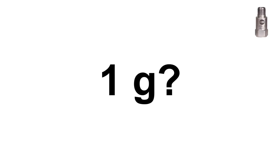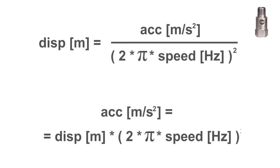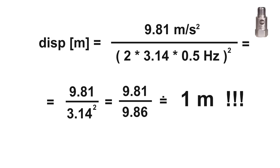But return back to the math formulas. We can use these formulas for conversion of acceleration to displacement and displacement to acceleration. Using this simple math, we can convert 1g to meters. If the speed is 30 rpm, it means 0.5 Hz. Do not forget to convert g to meters per square second firstly.